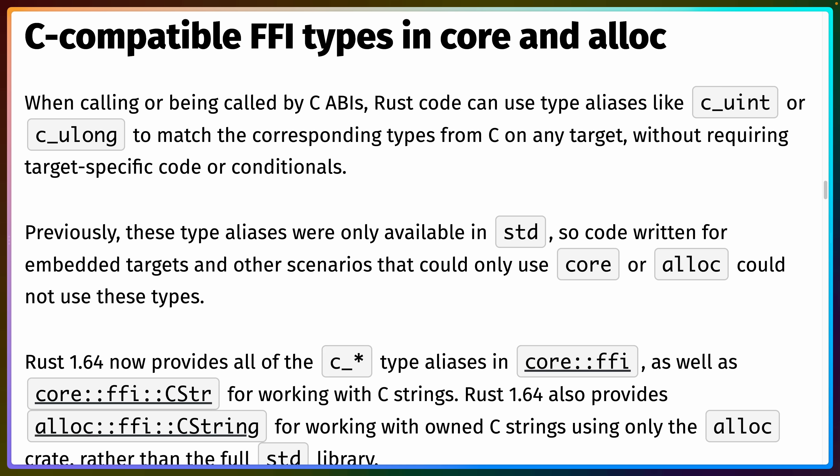We also have C-compatible foreign interface types in core and alloc. There are a couple of top-level crates in Rust. The one you're probably most used to is std — the standard crate with your HashMap, strings, etc. Embedded systems need a version of Rust that doesn't rely on the operating system, so core is the underlying layer implementing everything that doesn't require OS functionality like memory allocation or file I/O. Type aliases for things like c_uint or c_ulong have been moved from std into core, so no-std programs like embedded systems can now use them.